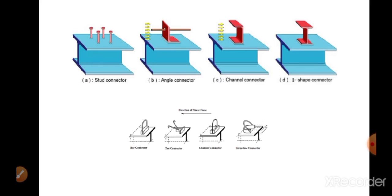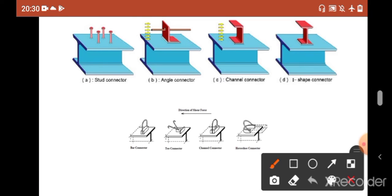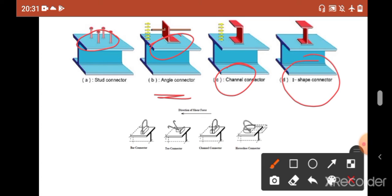Now let's see how many types of stud or shear connector are available. Based on your requirement, you can use simply a stud as a shear connector. If the magnitude of shear stress is more, we can use an angle connector. If the angle is not sufficient to carry the shear stress, we have to use a channel connector. Even if the channel is not sufficient, we have to use an ISEP shear connector. Everything depends completely on the magnitude of your shear stress.